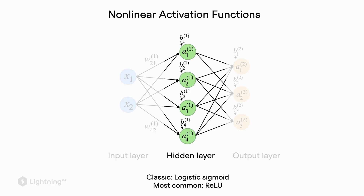In the previous video, we introduced the multilayer perceptron architecture. Let's now talk about some of its design considerations. We mentioned that we are using an activation function at the hidden layer — either the logistic sigmoid function, the ReLU, or a different type. However, this activation function needs to be a nonlinear activation function. We can't just leave it out, and we will see why. The first design consideration is: do we really need a nonlinear activation function?